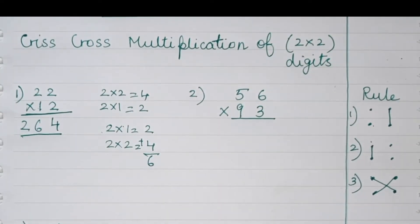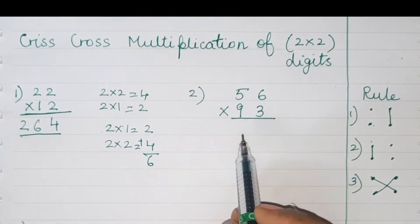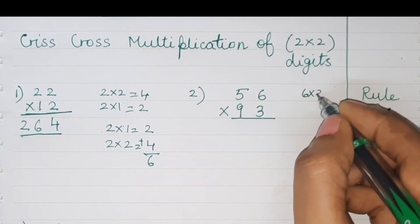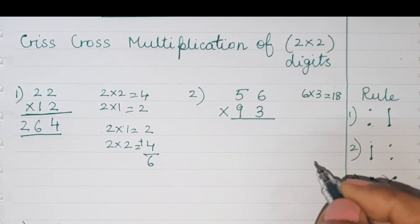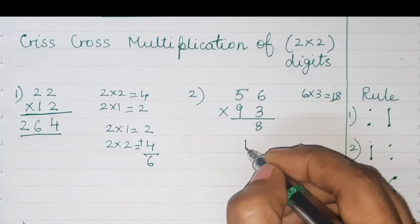Now we'll do the second sum so you can have a better idea. Digit on the right are six and three. Six into three is 18. Write 18 as shown.